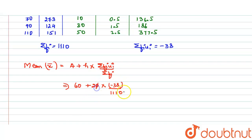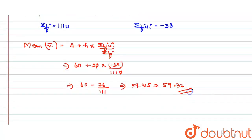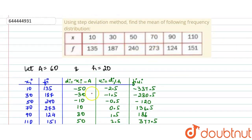The zeros cancel, leaving us with 60 + (20 × (−38/1110)), which simplifies to 60 − (76/111). This gives approximately 59.315, or rounding, 59.32. Therefore, the mean of the given frequency distribution is 59.32.